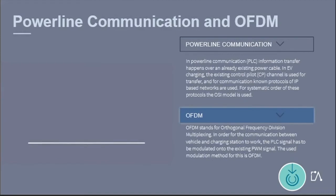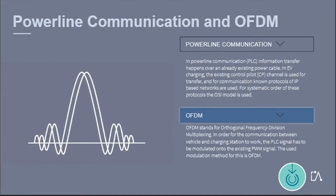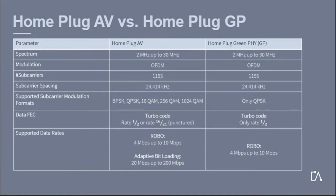The modulation method used for this is OFDM. The communication standard Home Plug Green PHY was completely deduced from the standard Home Plug AV; however, Home Plug Green PHY was greatly simplified for the circumstances of EV charging. For example, QPSK is the only modulation method used for sub-carriers.